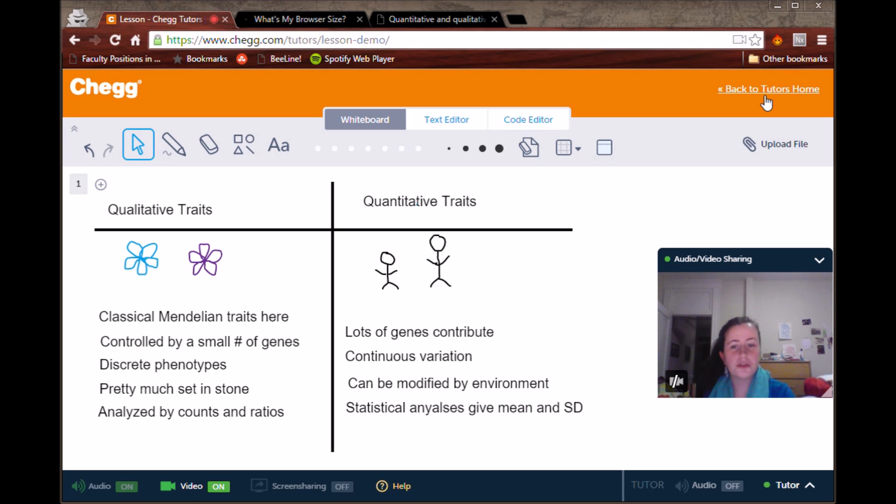Qualitative traits are also pretty much set in stone. If you have a flower that is purple, pretty much no matter what happens to it in its environment, it will stay purple. Or if it's blue, it will stay blue.